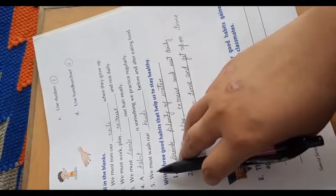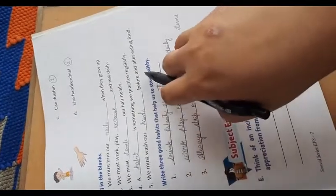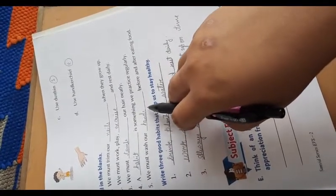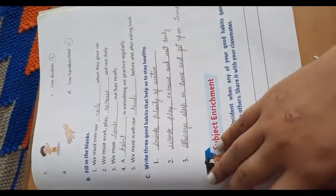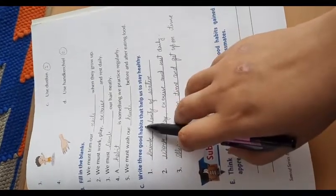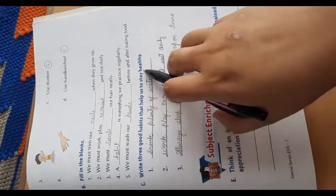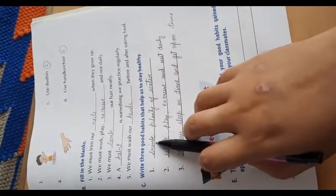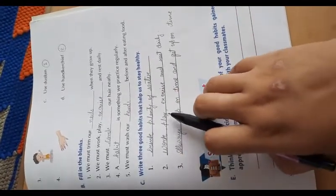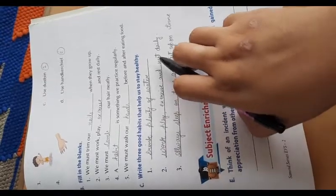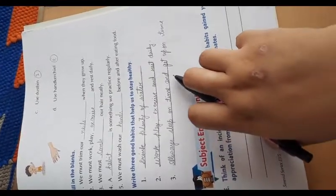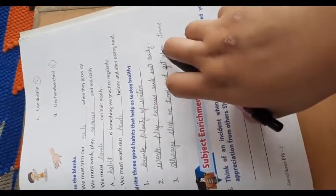Now last, we must wash our dash before and after eating food. Hands, H-A-N-D-S. Now question number C, write three good habits that help us to stay healthy. First, drink plenty of water. Second, work, play, exercise, and rest daily. Third, always sleep on time and get up on time.